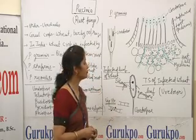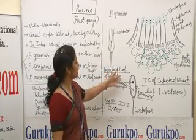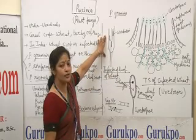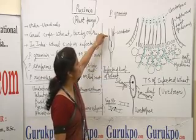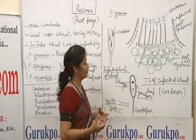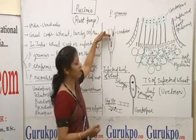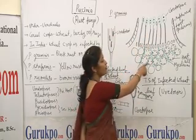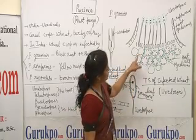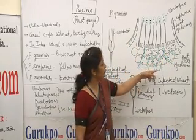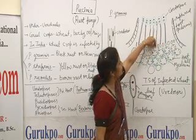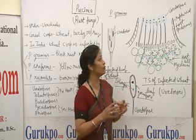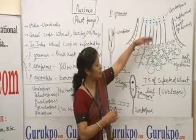Now we will see the structure of Paxinia graminis which causes black rust disease on wheat. Morphologically, when we see this infected leaf of wheat, these are the black pustules which appear on the infected host plant, that is wheat. If we cut a section from this infected area, we will see a group of spores. These spores are called uredospores. They are formed on dikaryotic mycelium. In this diagram, this is the mycelium of Paxinia graminis on wheat, and these are the uredospores which are formed on an erect structure called conidiophores. When they are formed in bulk, due to the pressure of these spores, the epidermis ruptures and the spores come out from the leaf surface.